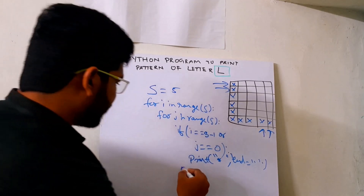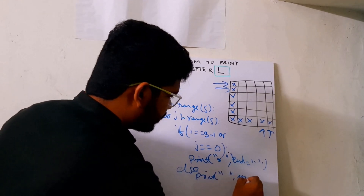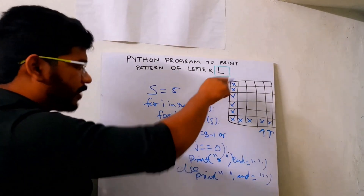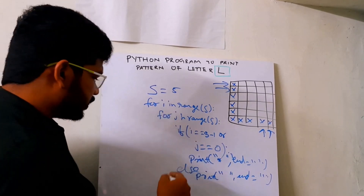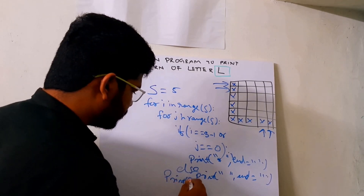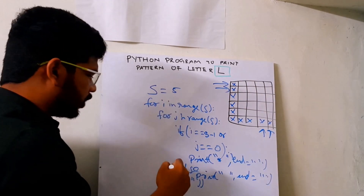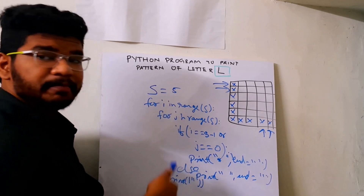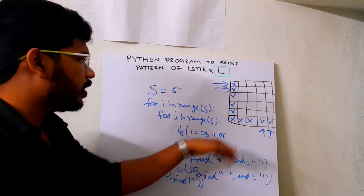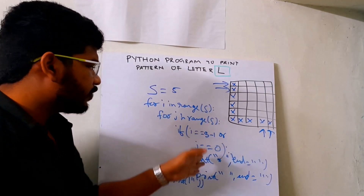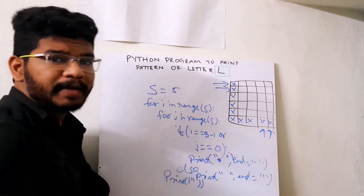The condition is: i equal to s minus one for the last row, and j equal to zero for the first column. In the else case I just print spaces, also with end as empty. After the inner for loop, I also need to print an empty print statement to go to the next line. So those are the two simple conditions — first column and last row — and two loops: one for rows and one for columns.